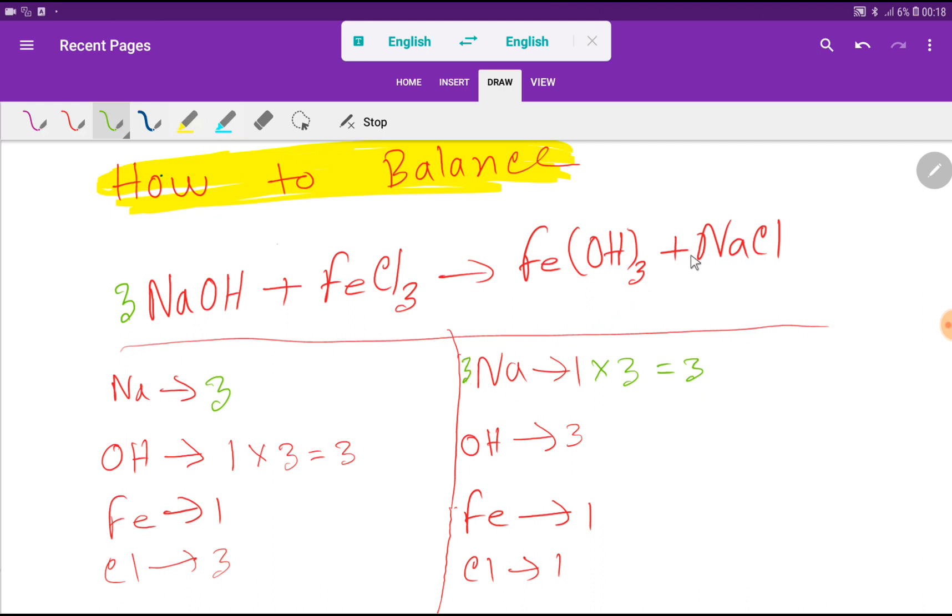That is here. If you put here 3, the number of sodium will be 3 and the number of chlorine will be also 3. So I have to update the number of chlorine.